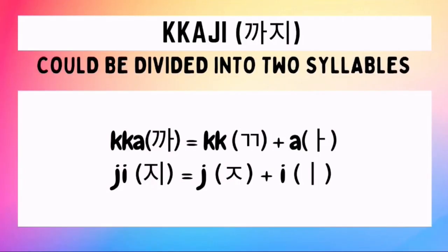How do we write Kaji in Hangul? Let's start with the first syllable Ka: we draw a double kiak or san kiak character followed by an A character. For the second syllable Ji, we draw a jiak character followed by an E character. We combine the Hangul for these two syllables to form the Hangul of the word Kaji.